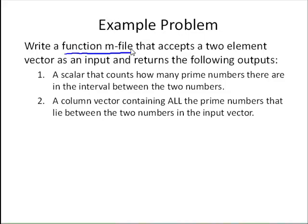One, we want a scalar that counts how many prime numbers there are in the interval between the two numbers that are input. And second, we want a column vector containing all those prime numbers that lie between those two numbers.